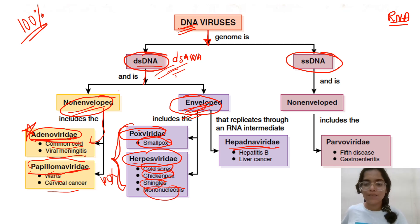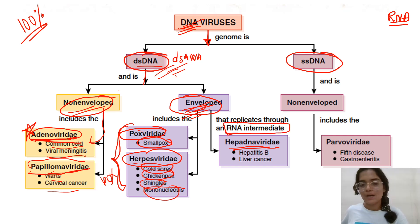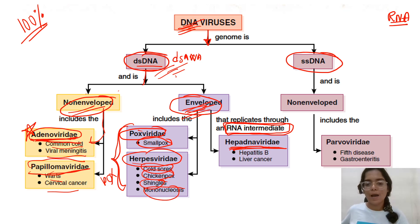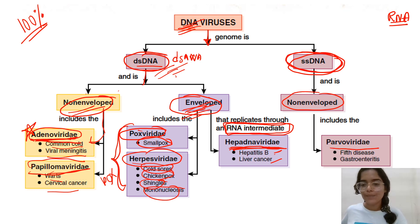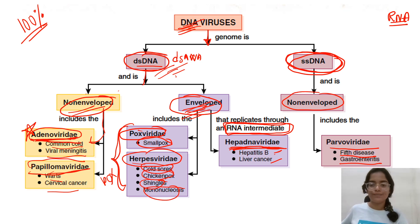Hepadnaviridae is a DNA virus but it replicates via an RNA intermediate. Under Hepadnaviridae, Hepatitis B is the key example. Next is single-stranded DNA, which is non-enveloped. Under this is Parvoviridae, which causes aplastic anemia and gastroenteritis.